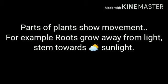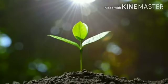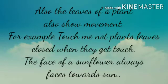With the help of their parts — the parts of a plant show movement. Roots grow away from light and the stem always grows towards sunlight.